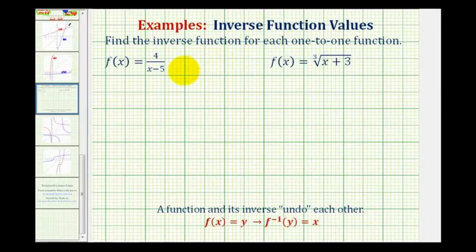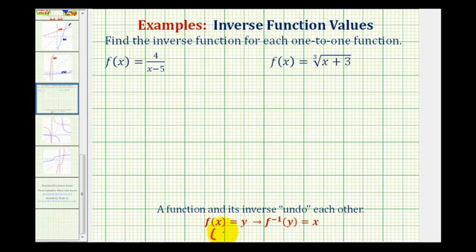We want to find the inverse function for each of the given one-to-one functions. The given functions are one-to-one so that we know their inverses are also inverse functions. Remember we can think of a function and its inverse as two functions that undo each other. So if f of x is equal to y, then f inverse of y is equal to x. That means for every point on f with x coordinate x and y coordinate y, there would be a corresponding point on the inverse where x and y are swapped.